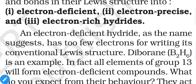Electron deficient refers to the octet rule, which we learned about in previous units. The octet rule states that most elements try to gain eight electrons in their outermost orbit. If they achieve eight electrons — by releasing, accepting, or sharing electrons — they gain a noble gas-like electronic configuration and become stabilized. So elements try to attain eight electrons in their outermost orbit for stability.